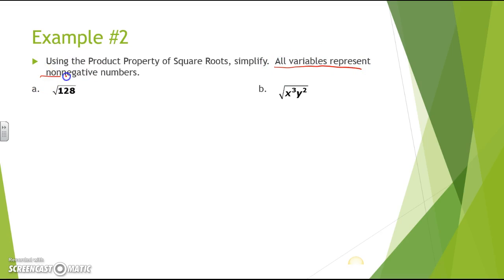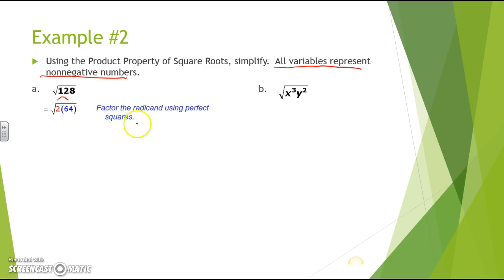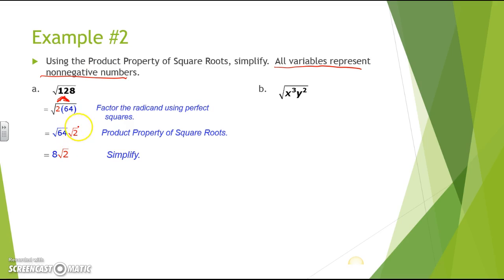Let's look at the square root of 128. We have to think of what two factors give you 128 — specifically, factor the radicand using perfect squares. 2 times 64 gives you 128, and both are perfect square numbers. So this becomes the square root of 64 times the square root of 2. The square root of 64 is 8, and you leave the square root of 2 under the radical sign since it doesn't give a whole number. So the final answer is 8 times the square root of 2.